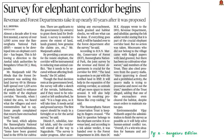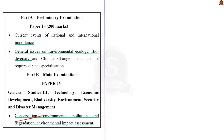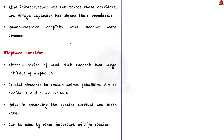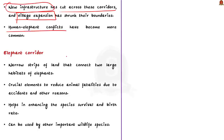Now let us take up the article about elephant corridors. The rising demand for land has led to degradation and fragmentation of the country's forest cover, and elephant habitats are a casualty of this destruction. Asian elephants travel between habitats by following traditional migratory routes, but over the past few decades, new infrastructure projects have cut across these corridors. Village expansion has also affected elephant corridors, causing them to disappear. This has led to more human-elephant conflicts — elephants ruining crops, destroying homes and causing tragic accidents.